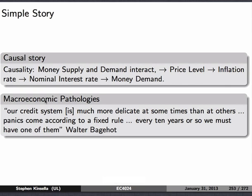I love this quote from Walter Bagehot, whose book Lombard Street should be required reading for anybody who wants to go into finance: 'Our credit system is much more delicate sometimes than others. Panics come according to a fixed rule — every 10 years or so, we must have one of them.' I love that quote.